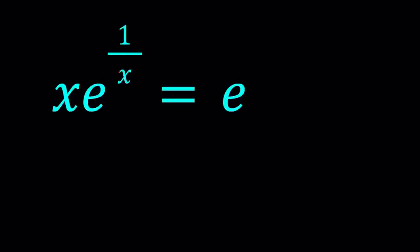Hello everyone. In this video we're going to be solving a nice exponential equation. We have x times e to the power 1 over x equals e, e being Euler's number, you know 2.7 something. And we're going to be solving for the x values.